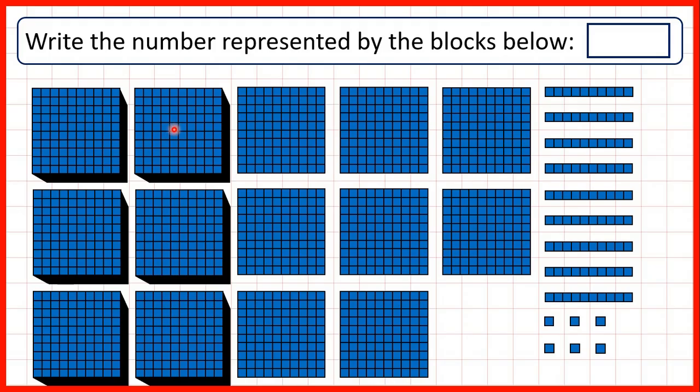And the way to think about a thousands block is to imagine ten of these hundreds blocks stacked on top of each other, because one thousand is the same as ten hundreds. So to write our number, we can count how many of each block we have.